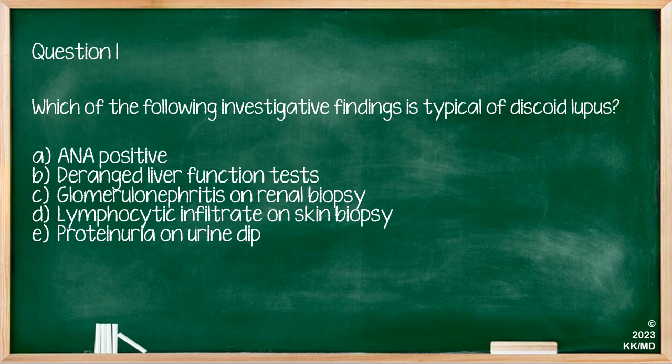Now let's look at some questions. Firstly, which of the following investigative findings is typical of discoid lupus? ANA positive; deranged liver function tests; glomerulonephritis on renal biopsy; lymphocytic infiltrate on skin biopsy; or proteinuria on urine dip. These are all findings you may find in various autoimmune conditions, but you'll recall that lymphocytic infiltrate on a skin biopsy is the typical finding in discoid lupus.